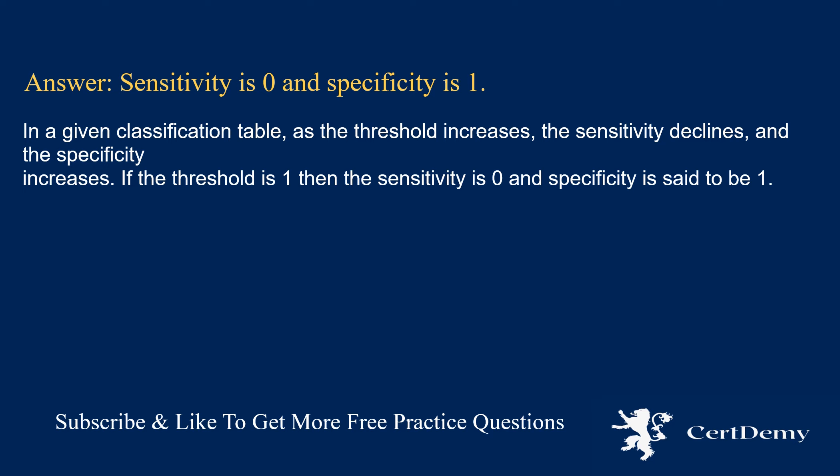In a given classification table, as the threshold increases, the sensitivity declines and the specificity increases. If the threshold is 1, then the sensitivity is 0 and specificity is said to be 1.